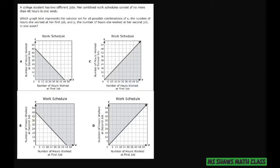Hi everyone! Our college student has two different jobs. Her combined work schedules consist of no more than 48 hours in one week. Which graph represents the solution set for all possible combinations of X, the number of hours she worked at her first job, and Y,